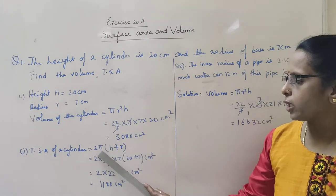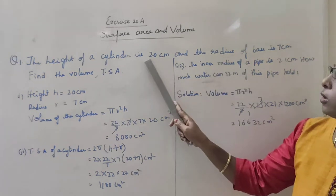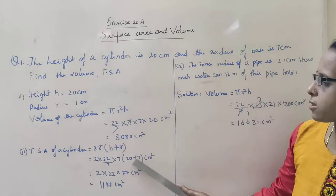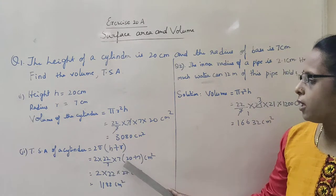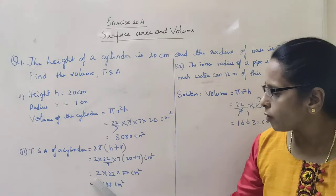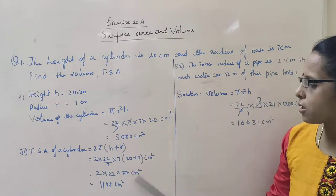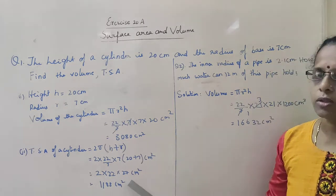So 2 into 22 by 7, how much is the height? Height is equal to 20 plus 7, radius is 7. So 2 into 22 by 7 into 7, 20 plus 7. So 20 plus 7 is 27. When you multiply all the numbers, we get 1188 cm square.